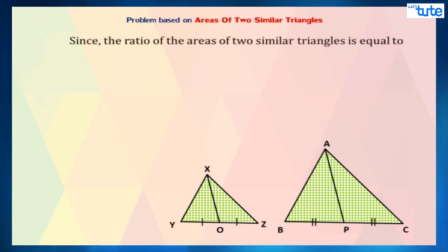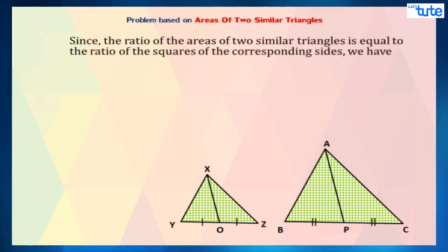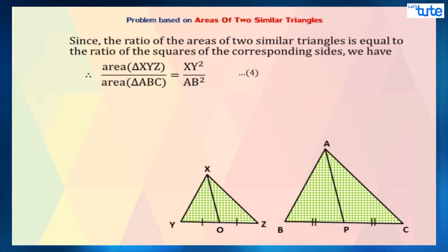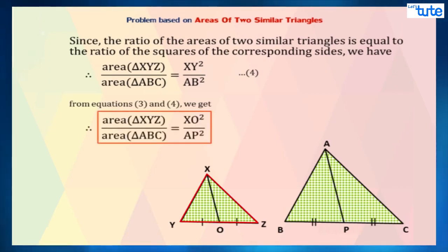Now, since the ratio of the areas of two similar triangles is equal to the ratio of the squares of the corresponding sides, we have area of triangle XYZ upon area of triangle ABC equals XY square upon AB square. By comparing equations 3 and 4, we can say that area of triangle XYZ upon area of triangle ABC equals XO square upon AP square. Hence, proved.